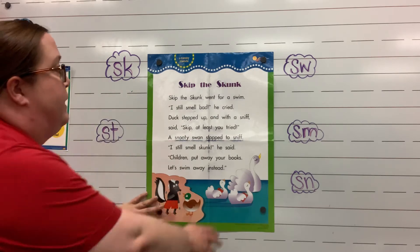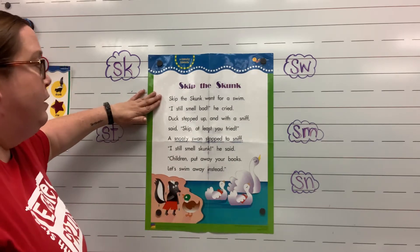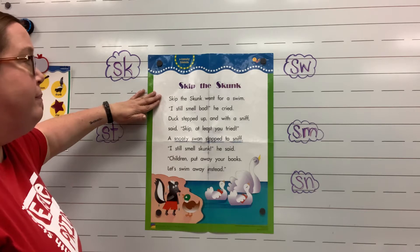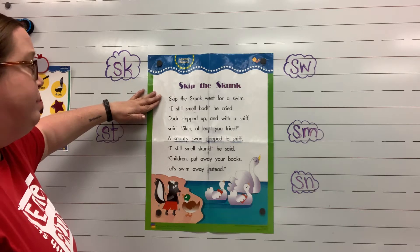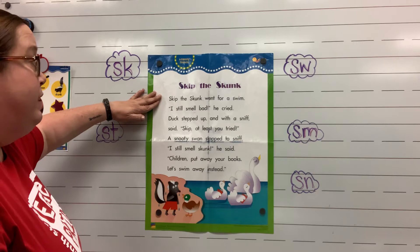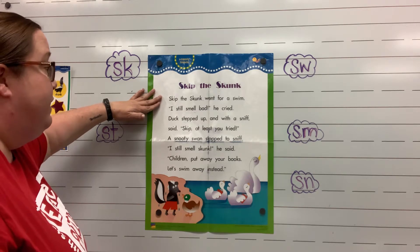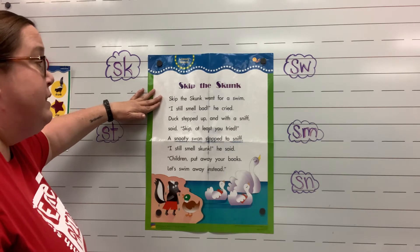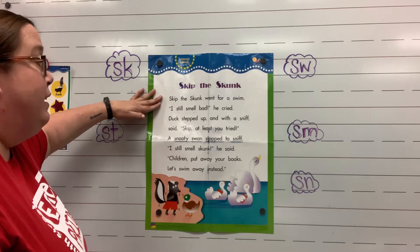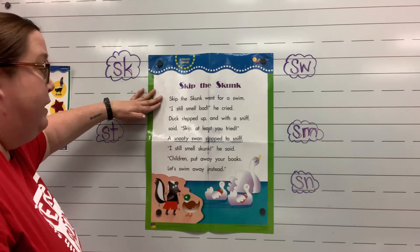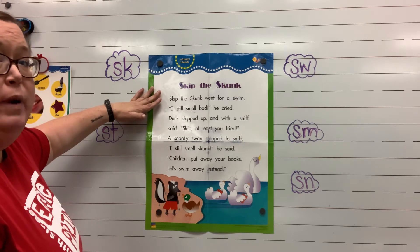It's called Skip the Skunk. Skip the Skunk went for a swim. I still smell bad, he cried. Duck stepped up and with a sniff said, Skip, at least you tried. A snooty swan stopped to sniff. I still smell skunk, he said. Children, put away your books. Let's swim away instead.